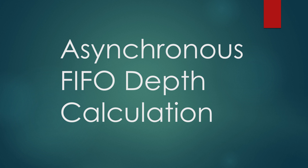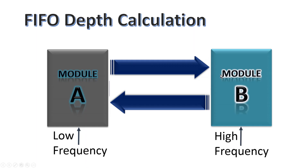Hello friends, welcome back to my channel. Today we are going to discuss a very commonly asked interview question: how to calculate the depth of an asynchronous FIFO. An asynchronous FIFO is used to transfer data from a module working at very high frequency to a module working at very low frequency. Let us suppose we have two modules in a system — module A and module B. Module A is working at a very low frequency and module B is working at a comparatively high frequency.